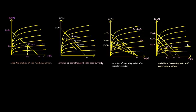This shows the variation of operating point with base current. I considered one line and took base current IBQ — if we vary IBQ, there will be three Q-points corresponding to three different base current values.